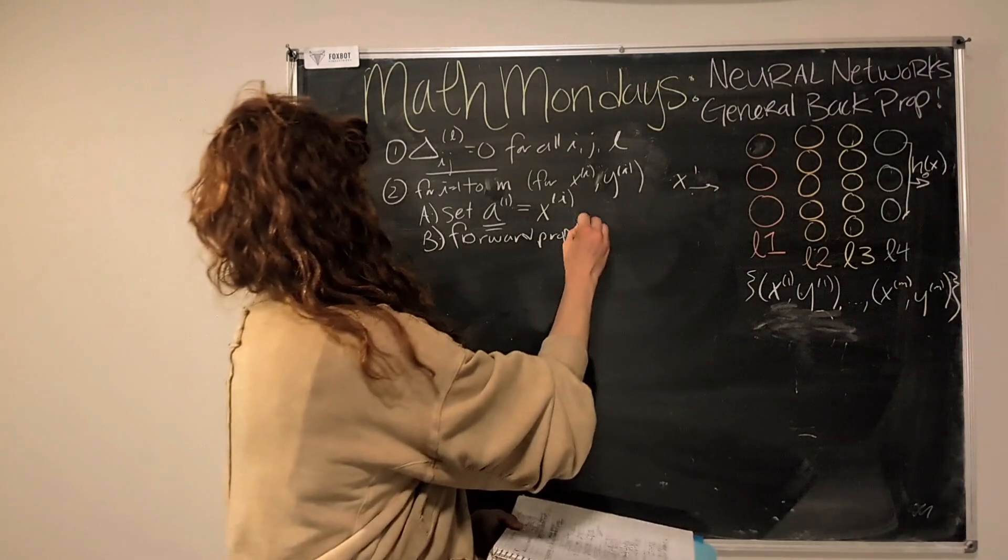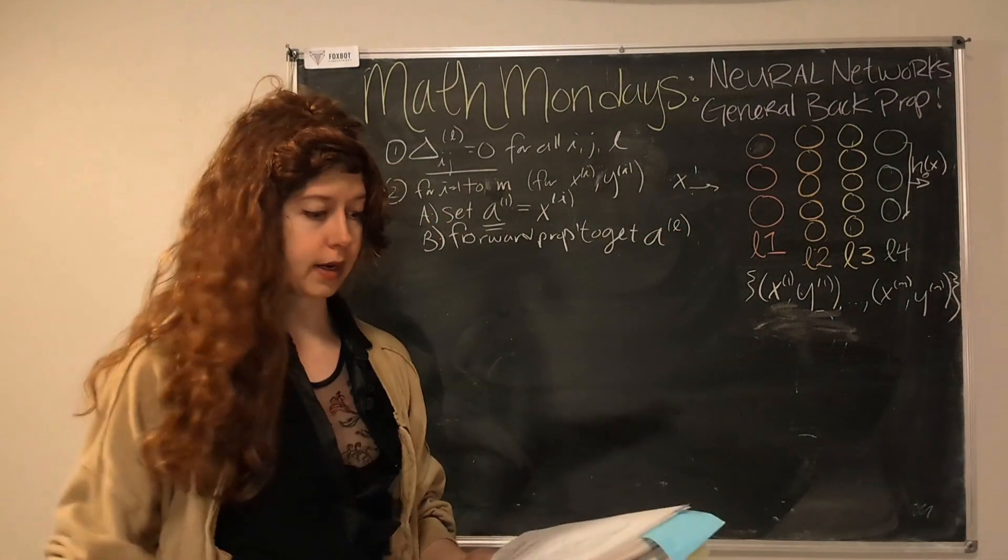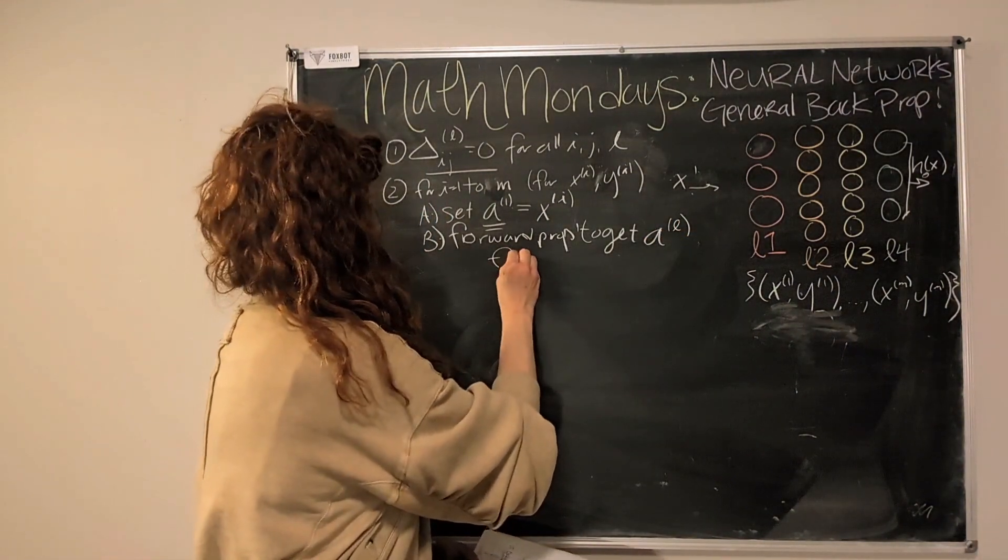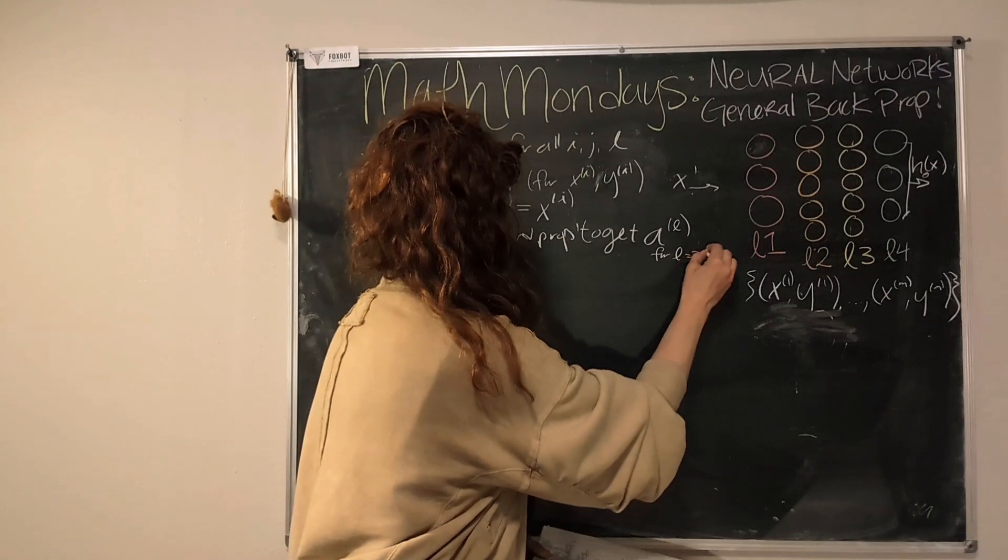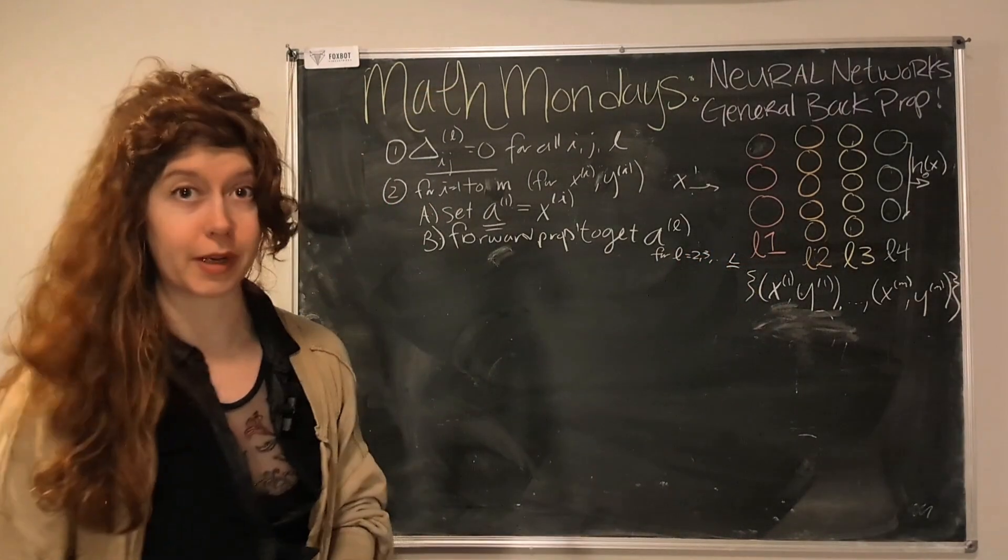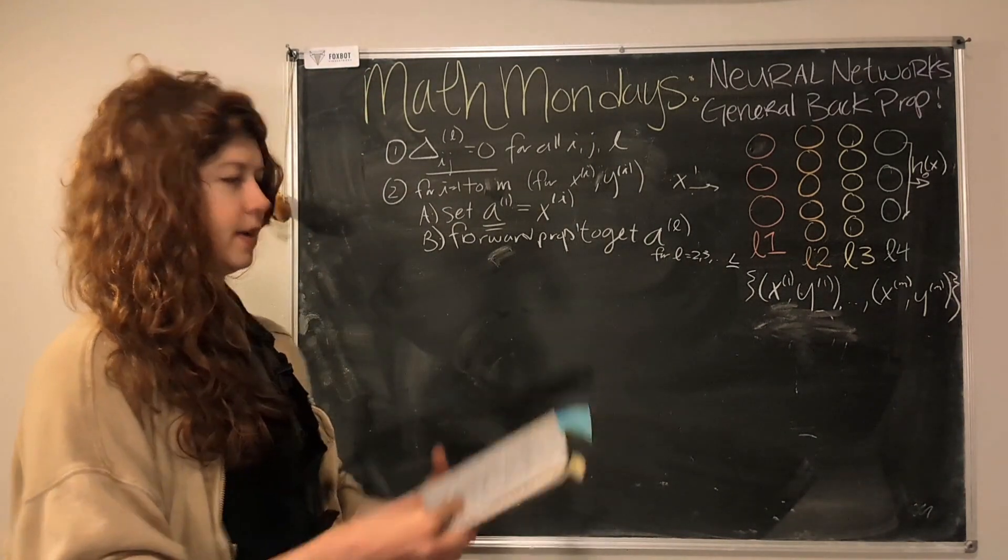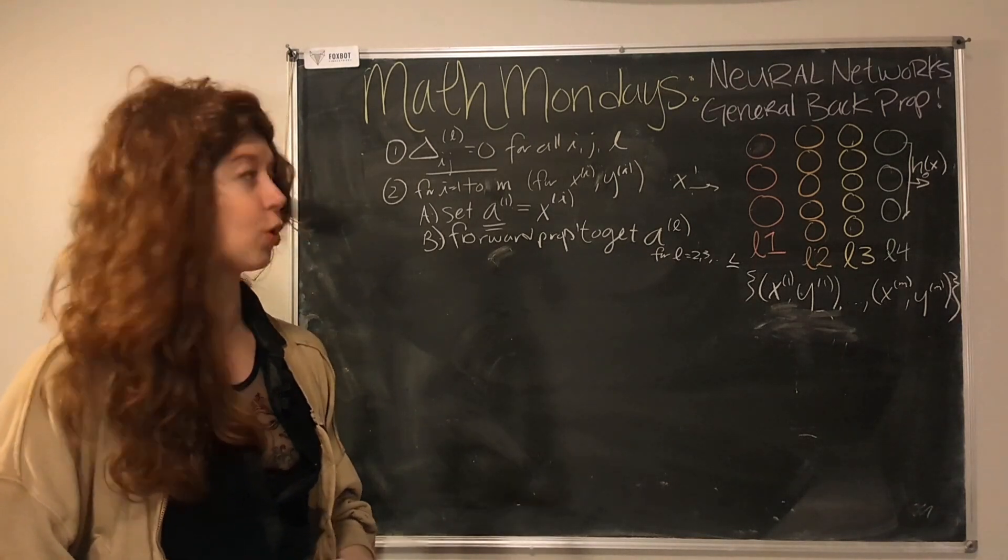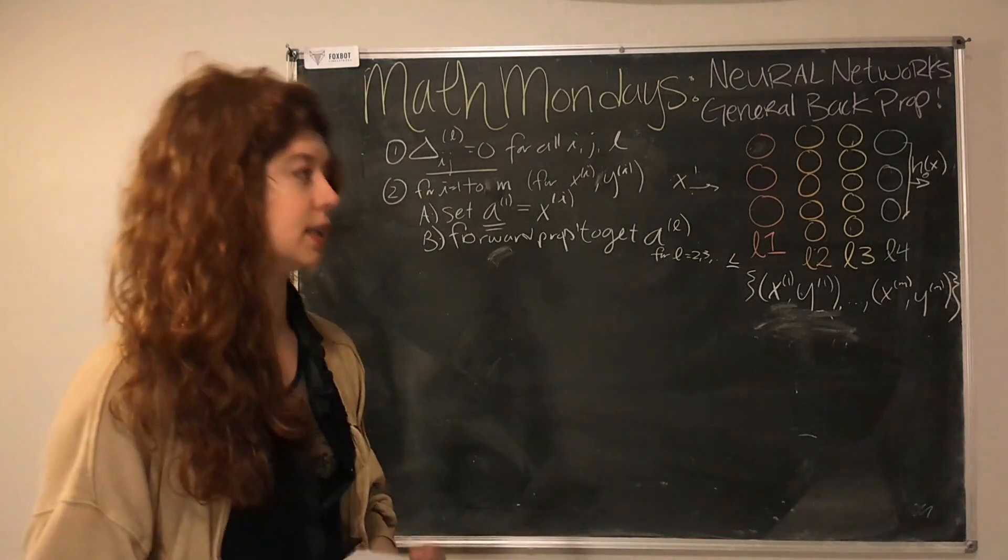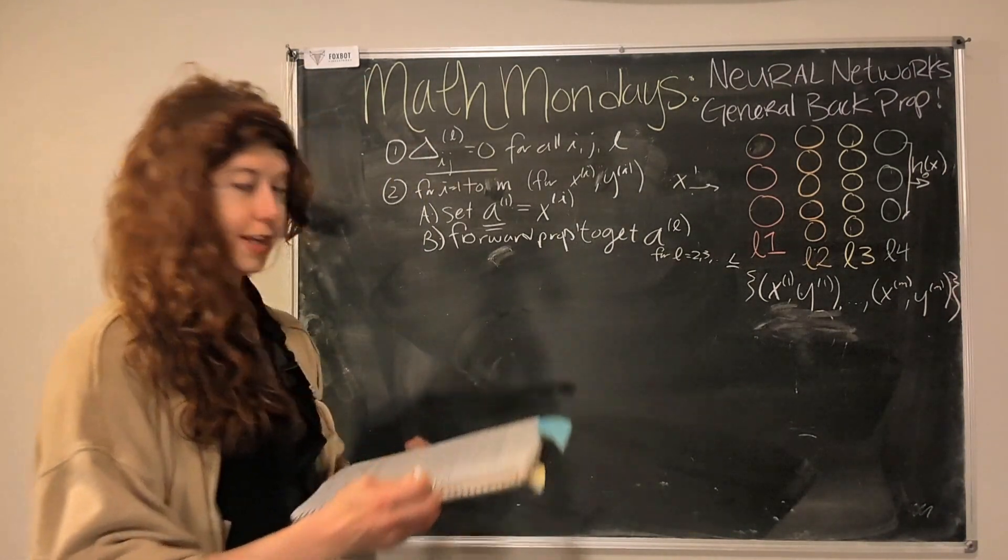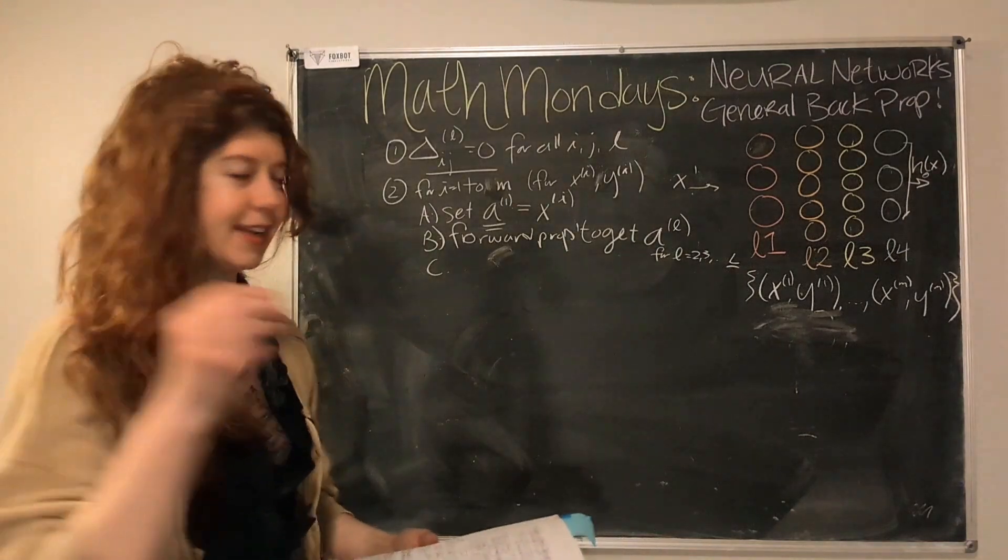So you do forward prop to get each activation node in all of the layers. This is for L equals two, three, all the way to however many layers you have. Because again, this is just a representation. Your neural network is probably going to be way bigger. Large language models, when they say it has like 7 billion parameters, it means it has, well, I guess parameters would be in each node, but it will have lots of layers and lots of nodes. So that's why software engineering is great. That's why coding is great. And we'll see that in a little bit. Actually, we're going to write in a loop, which is fun.